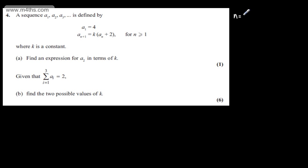If we consider when n equals 1, we will have a sub 2 equals k lots of a sub 1 plus 2. We know that a sub 1 equals 4, so we can say a sub 2 is k lots of 4 plus 2, so a sub 2 will be 6k. There's now our expression in terms of k for a sub 2.